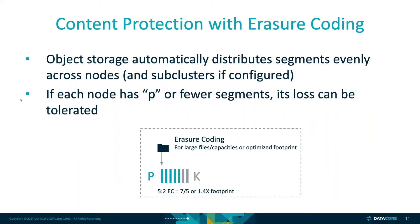If you have subclusters configured where you have groups of chassis handled in a given fashion — say you want protection per rack, or protection per power distribution unit — you would use a subcluster approach. Ultimately, it's going to take those segments and spread them across the divisions that have been defined for the cluster.